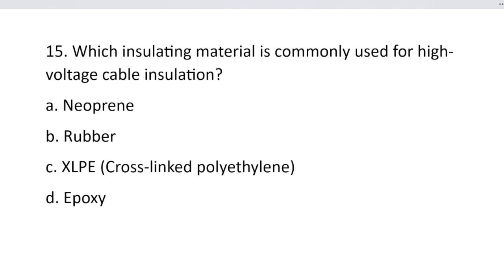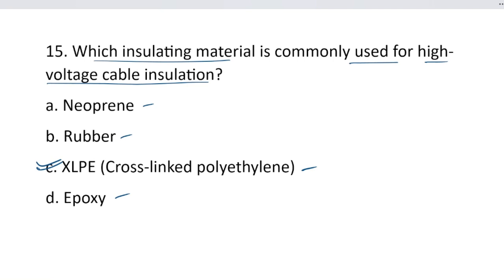Question number 15. Which insulating material is commonly used for high-voltage cable insulation? Option A, neoprene. Option B, rubber. Option C, XLPE — cross-linked polyethylene. Option D, epoxy. The correct answer is option C, cross-linked polyethylene.